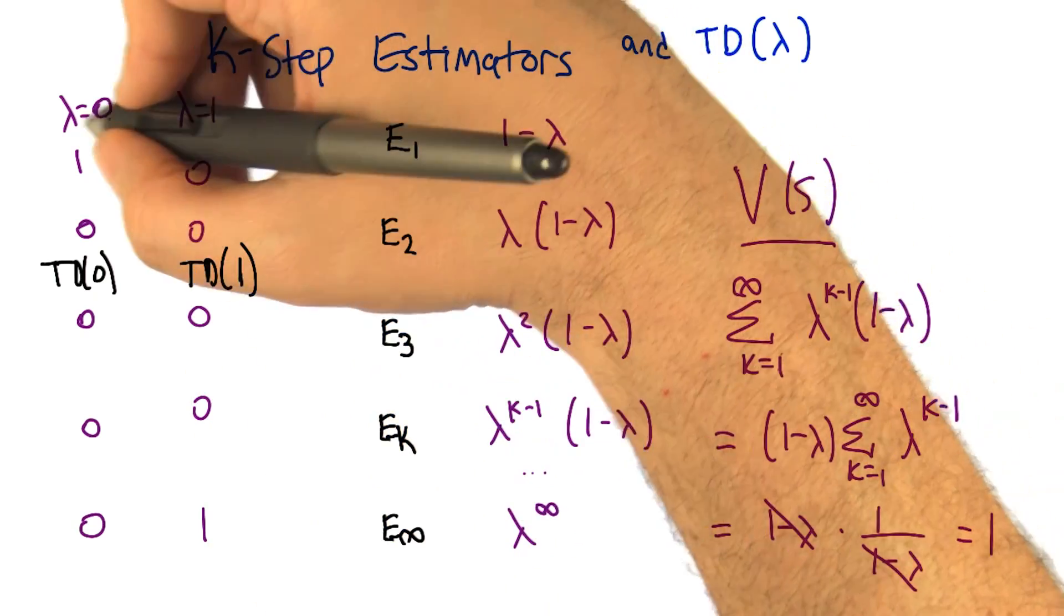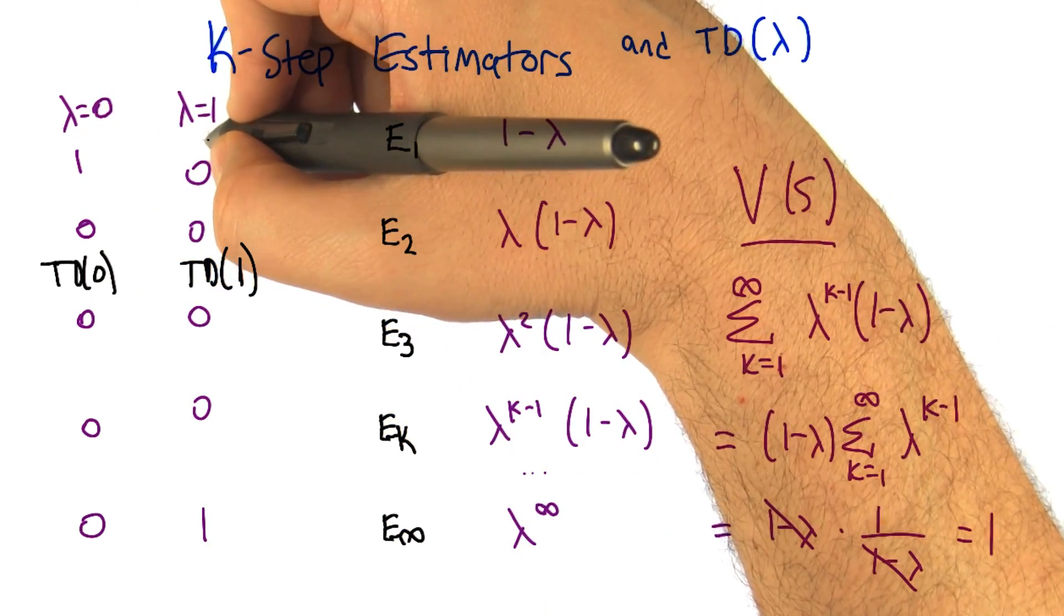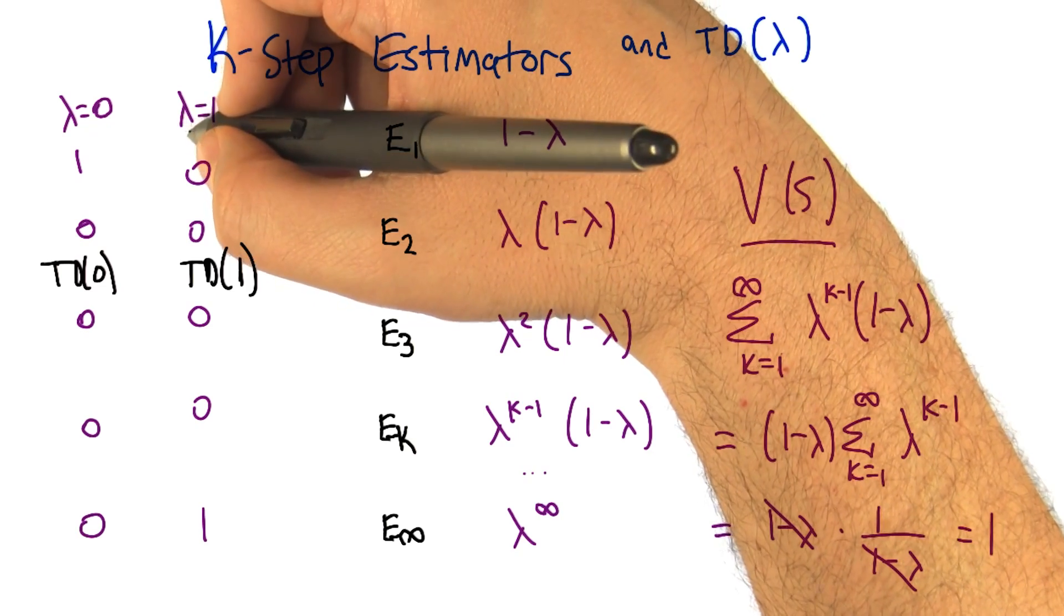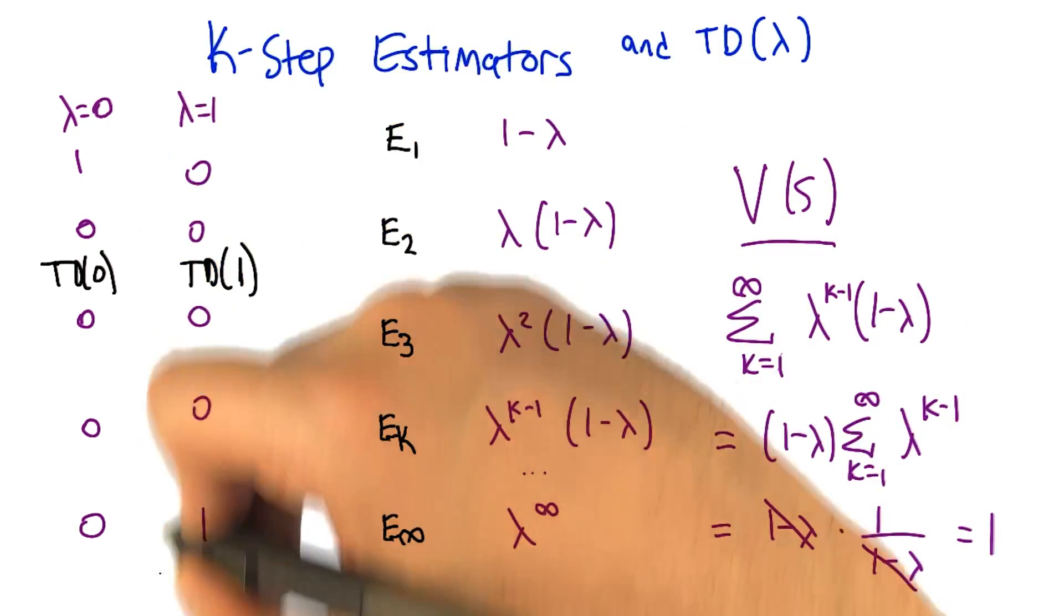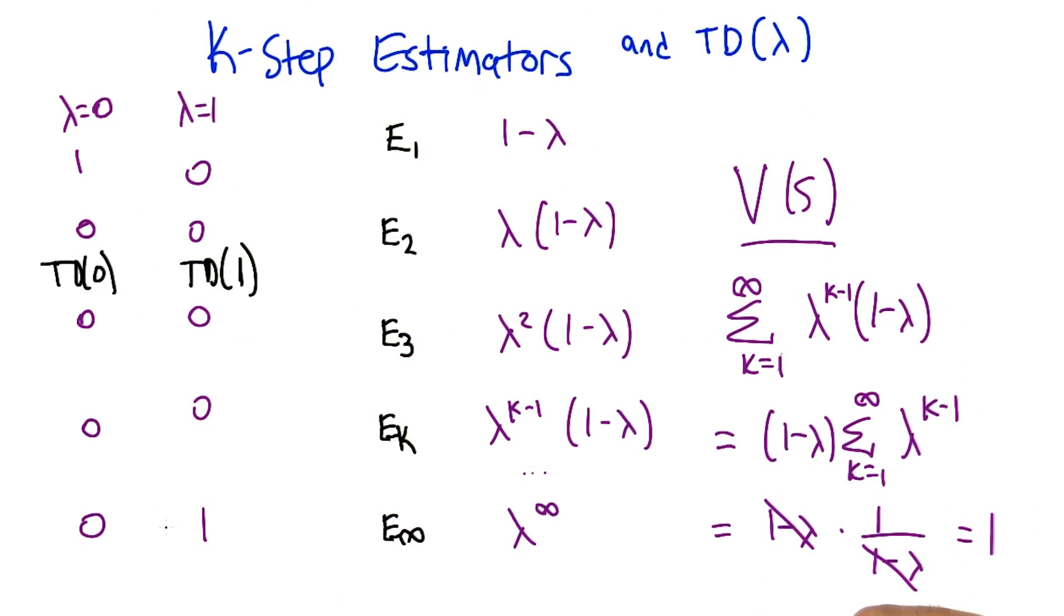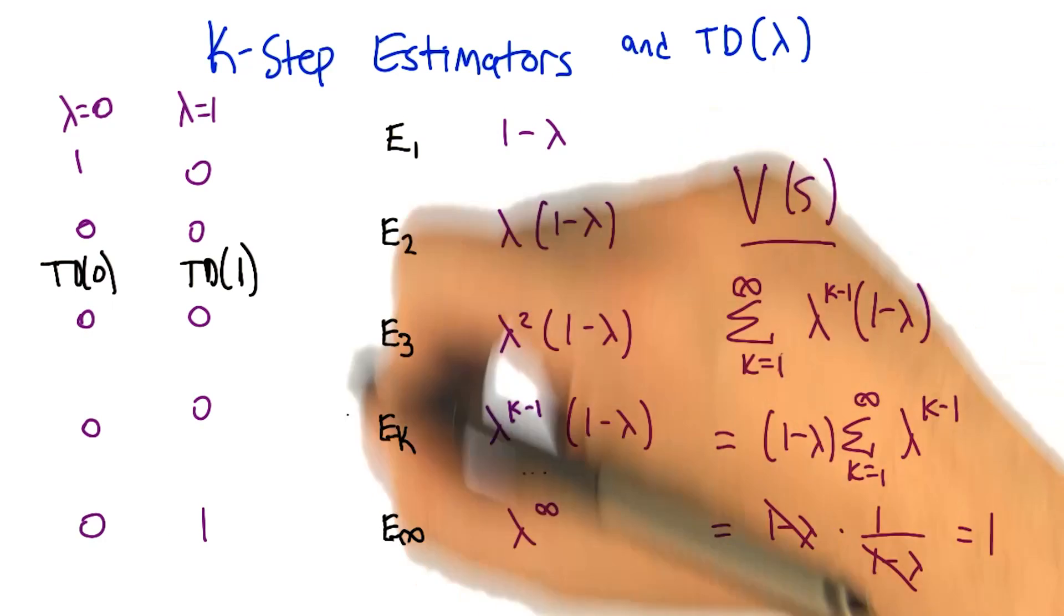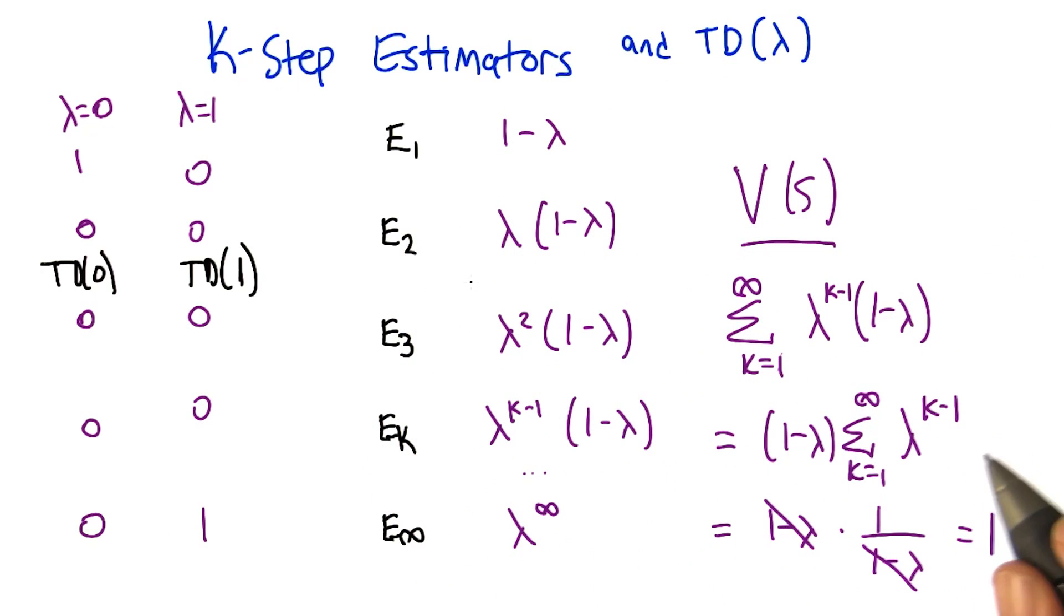But the important thing is that for in between values of lambda, like a half, or a point three, or something like that, we actually get weights on all of these to some degree. And it's combining all those different estimators together. And that seems okay.